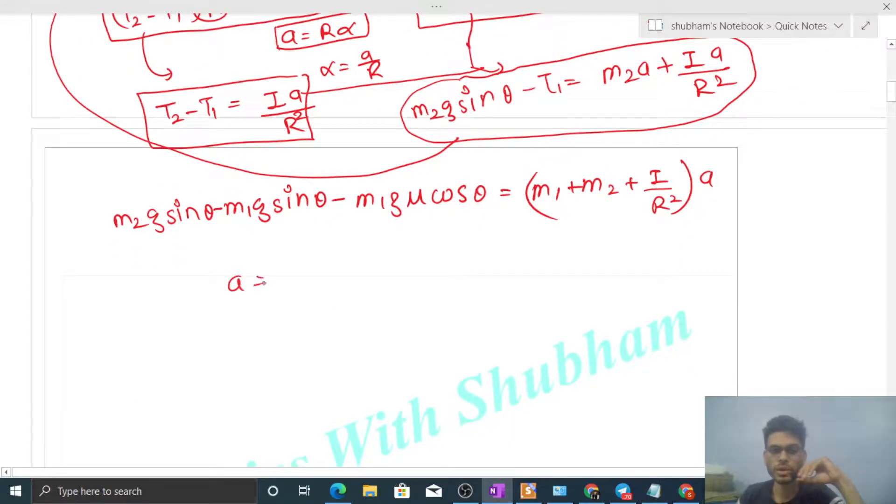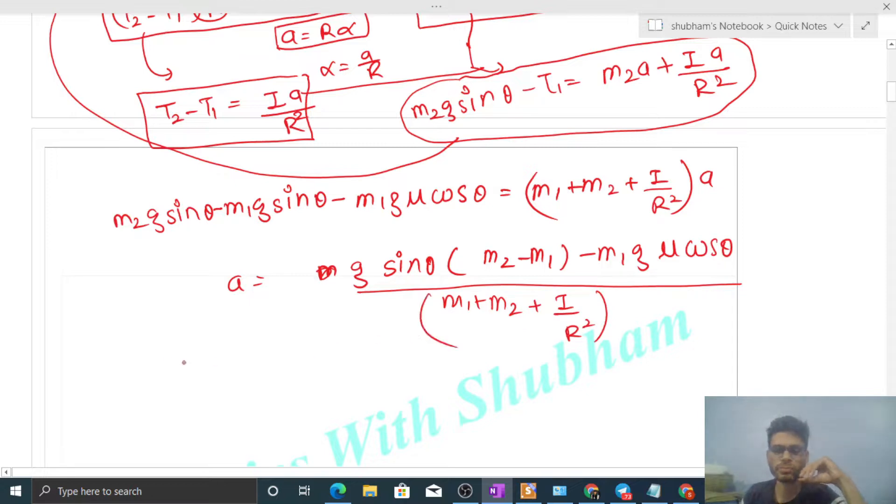So you can find out the value of acceleration now. That will be simply - let's take g common, g into sin theta also common - so here you see what remains: M2 minus M1, and here minus M1 into g into mu into cos theta, divided by M1 plus M2 plus I upon R square. This way now you can put the value of M1, M2, mu value 0.5, theta value 45 degrees, I value is given, R value is also given. By putting all the variable values, you can find out the numerical value for the acceleration.